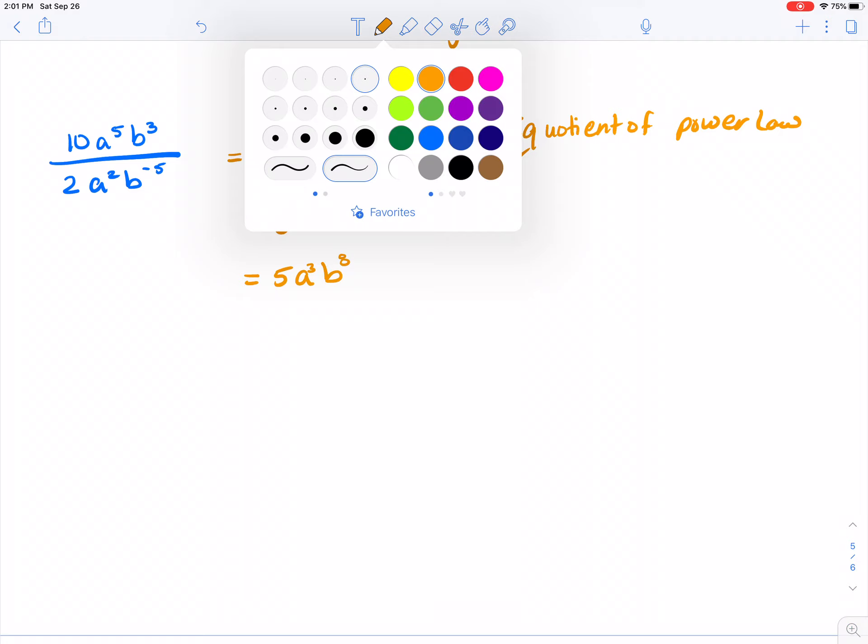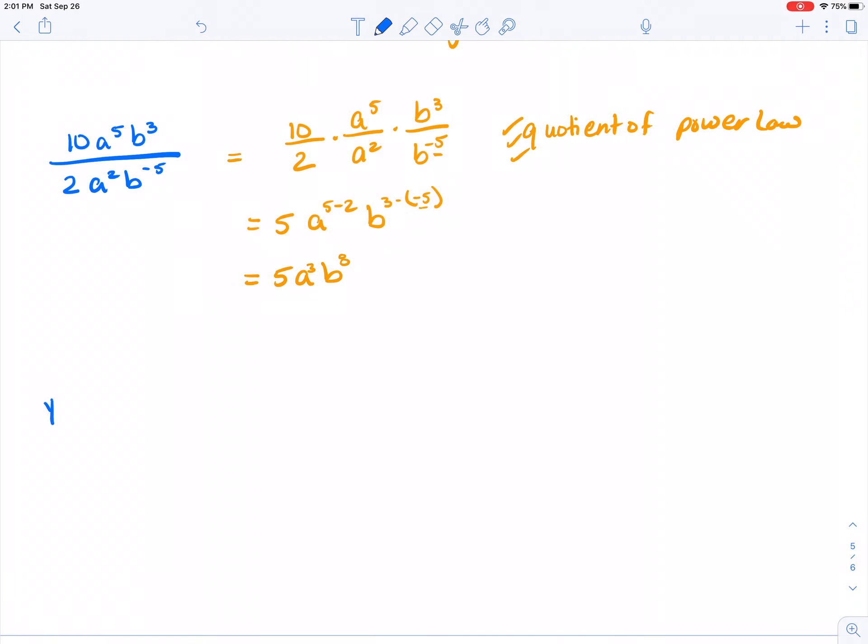Now I'd like you to try a couple. Try problem a: m to the 4 n to the negative 2 times m squared n to the 4th. And problem b: 6 x to the 4 y to the minus 3, all divided by 14 xy squared. Pause the video and come back and find the answers.